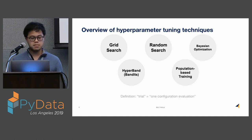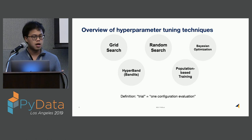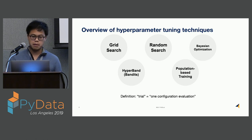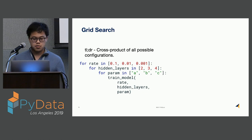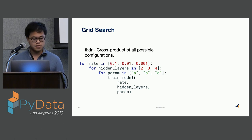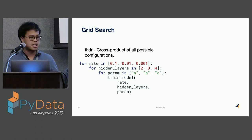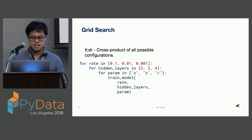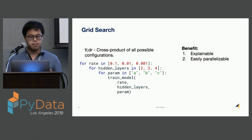I'll be using the term "trial" to refer to one configuration evaluation. Grid search is a very simple and standard technique for evaluating multiple hyperparameter values. The idea is that you take a cross product of all possible configurations — a list of values across different dimensions. The benefit is that it's very easily parallelizable and provides a lot of insight about how your hyperparameters affect each other, which is very important in research.